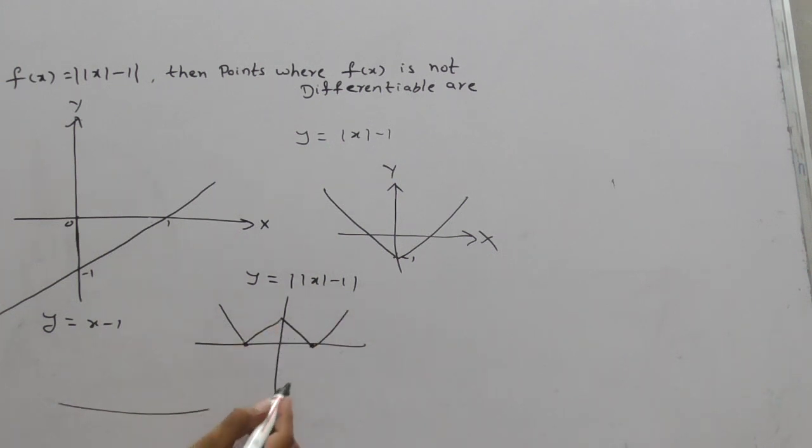This is y equals ||x| - 1|. At -1, at 1, at 0. Clearly, this graph has sharp edges at 3 points.